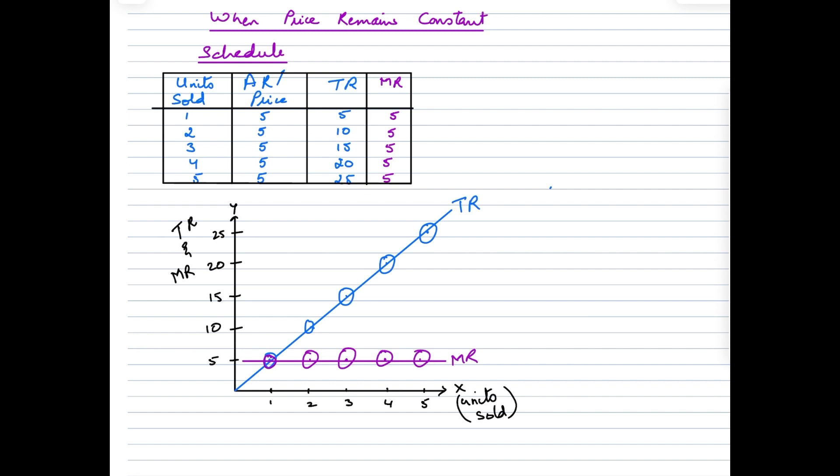When we take a closer look at the schedule, we see that MR is equal to AR, which is also equal to Price. So let me quickly jot that down on the diagram as well: MR = AR = Price.